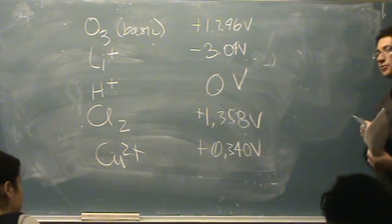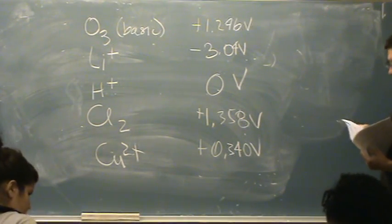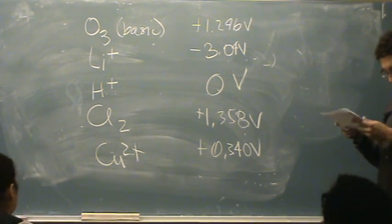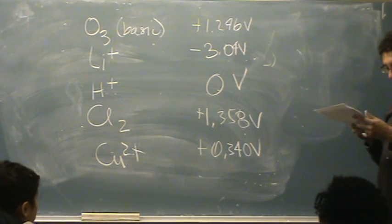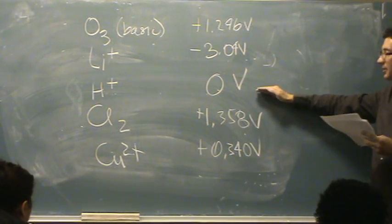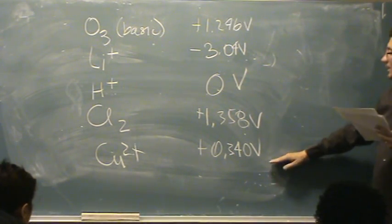This would be kind of a weird question to ask which will plate out first. Because, let me go back to my reduction potential table. Plated out usually refers to a metal. And this one doesn't have a metal product. This does. This doesn't have a metal product. This does not have a metal product. And this does.